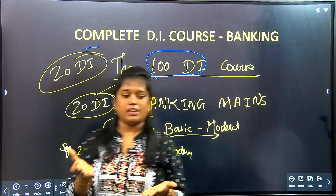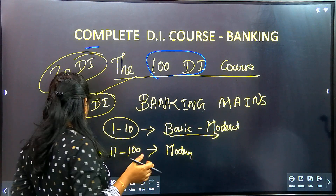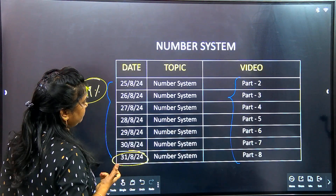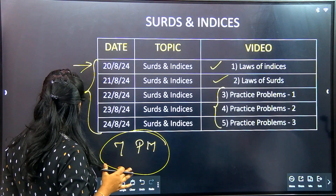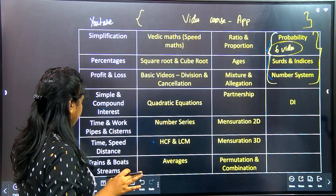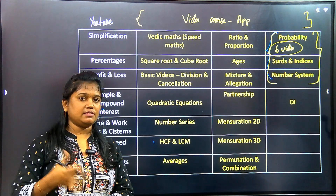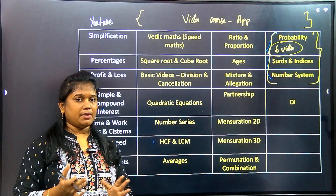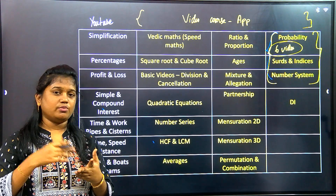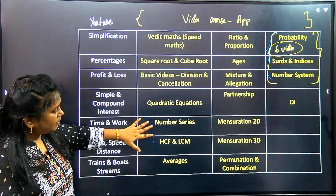The first video will be free. If there are other videos, we will update the app on this date. We will update the schedule. We will complete the course at the end of August. Next, we will have the DI course, and we will add high level sums. We will also work on the advanced math course and reasoning course, concentrating on all topics.